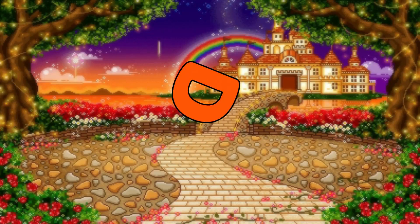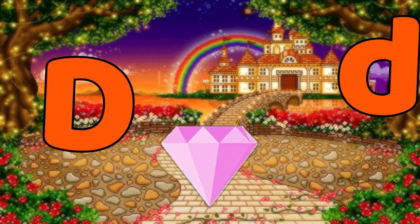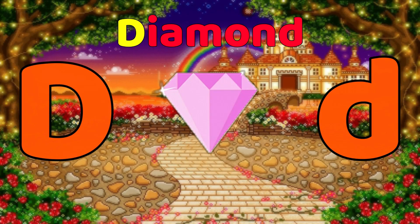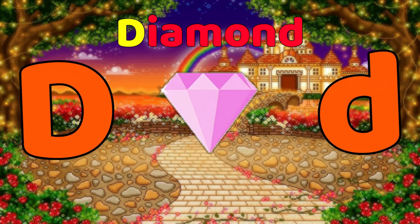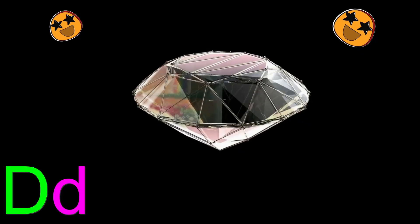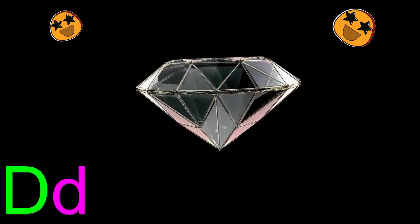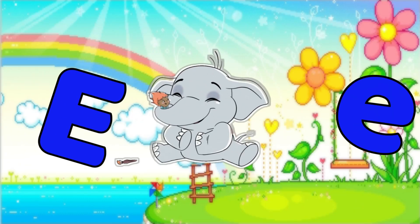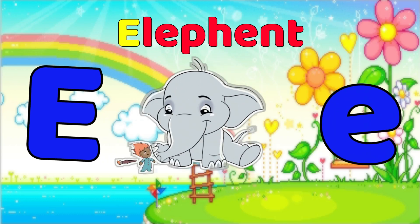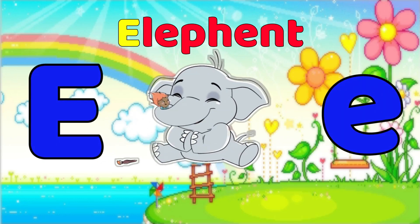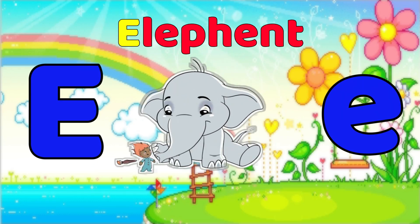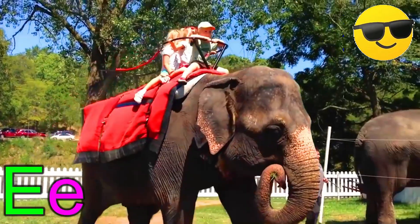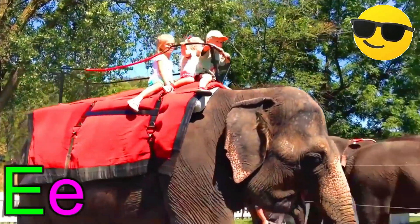D is for Diamond. d-d-diamond, d-d-diamond. E is for Elephant. e-e-elephant, e-e-elephant.